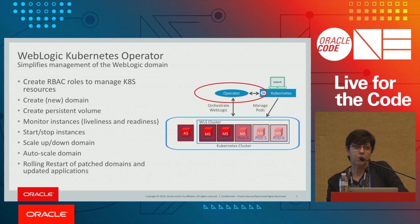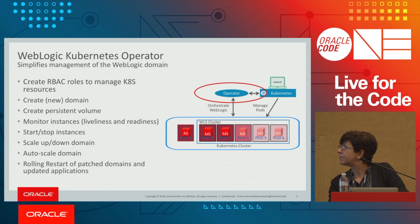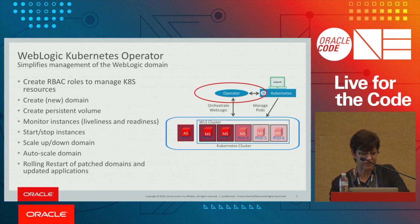The WebLogic Kubernetes Operator creates RBAC roles for authorization to start, stop, and restart servers, so only certain users can perform those operations. It can create a domain, create the persistent volume where logs are persisted, where the domain home will be persisted, as well as your application binaries.